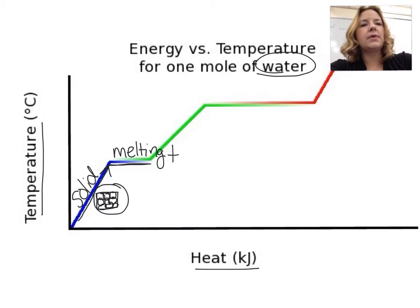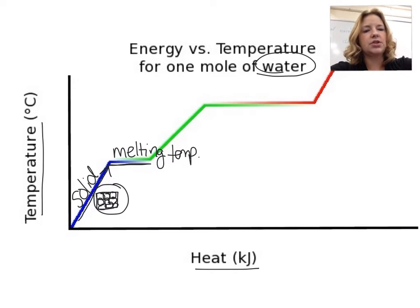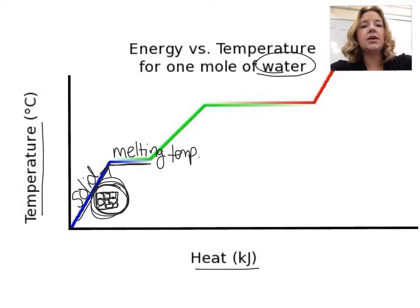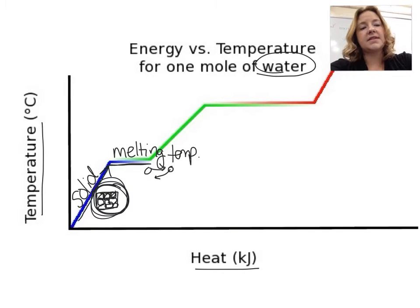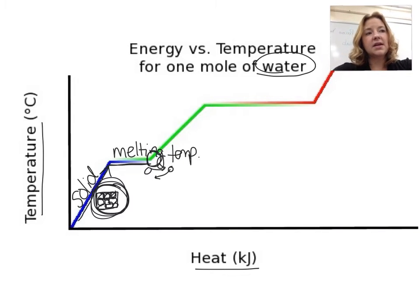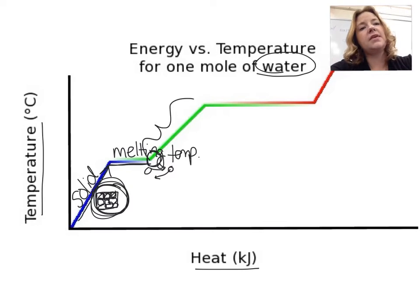This is when all the molecules are absorbing the energy, which is why the temperature doesn't change. The molecules are going from this solid state, where they are very compact together, to being able to flow past one another as a liquid. Once the temperature starts to increase again, that tells us that the molecules are able to start absorbing energy again. At this point we're going to label that as a liquid.